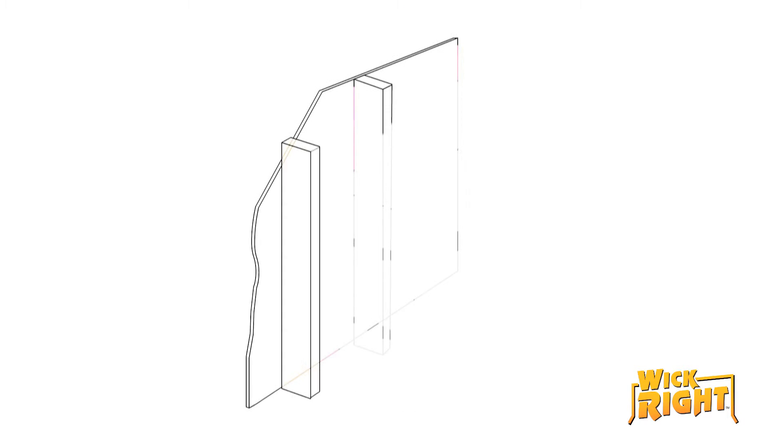Once water migrates from the concrete block to the framing studs, whether the studs are steel or wood, the insulation in the walls will become saturated and mold will begin to grow.